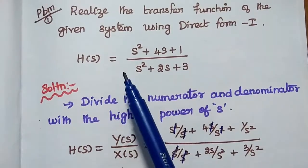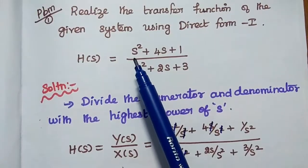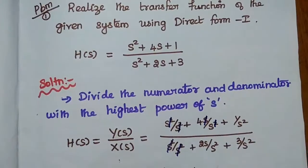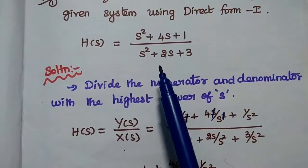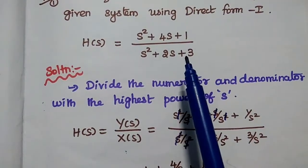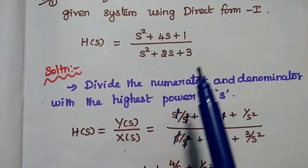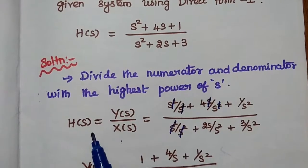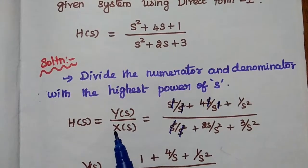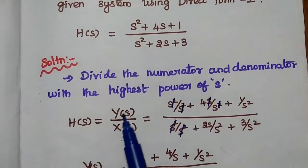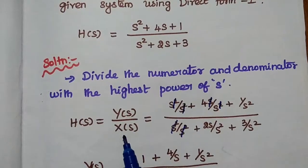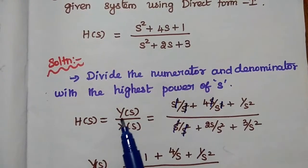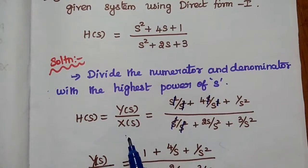In the given transfer function, the highest power of S is S to the power 2. We are going to divide the given transfer function by S power 2. In this step, we can write H of S, which is defined as the ratio of the Laplace transform of the output signal to the Laplace transform of the input signal. Simply, H of S is equal to Y of S by X of S.